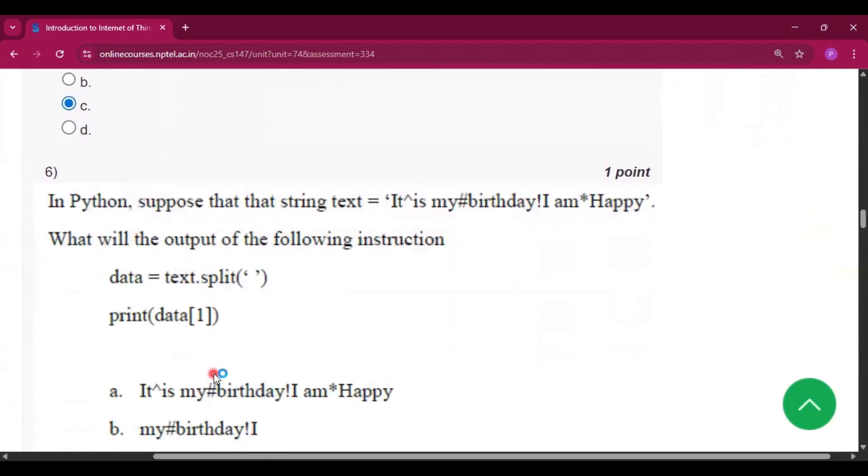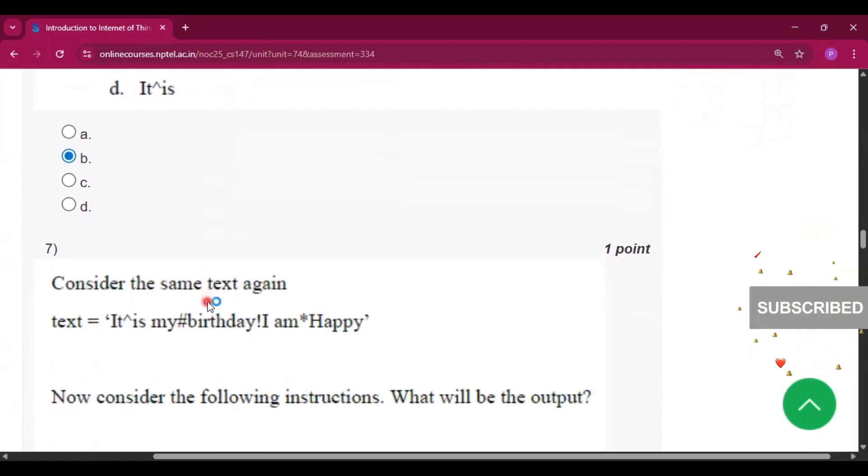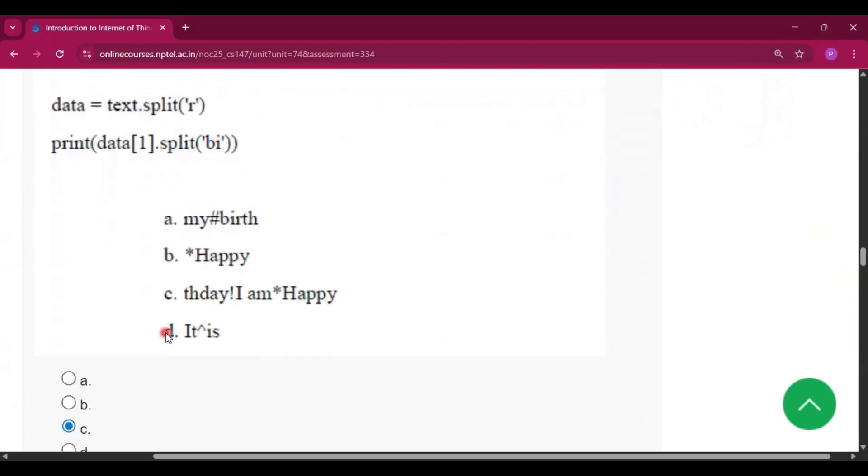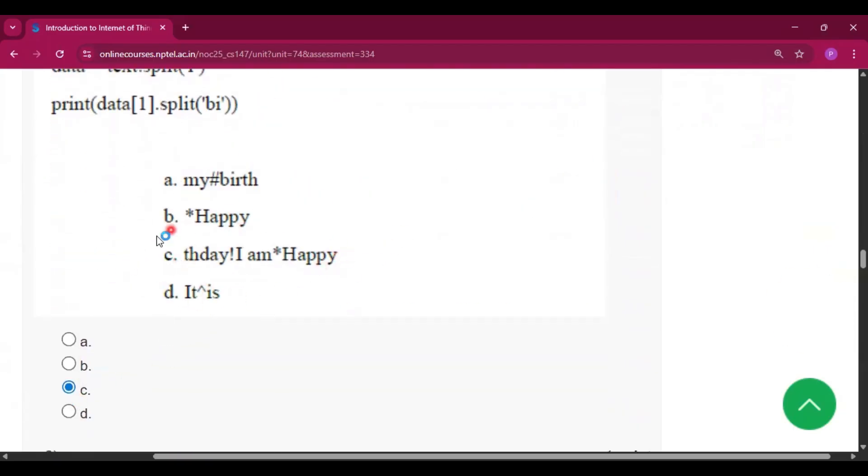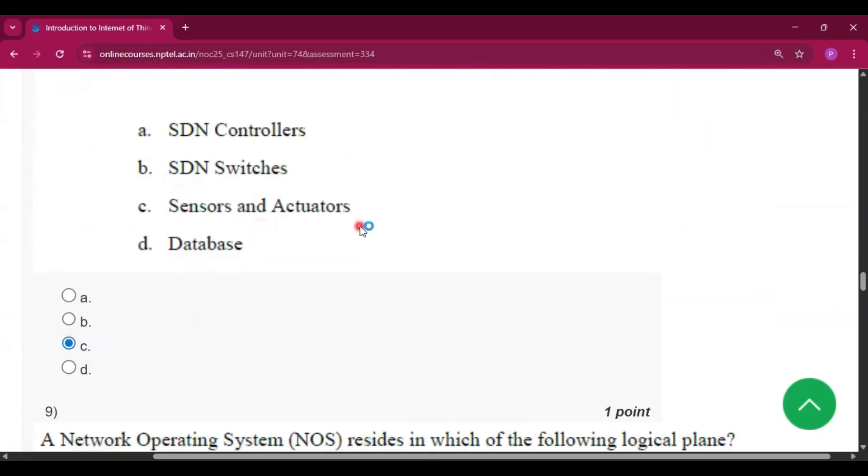Now question number six, the answer will be option B, that is 'my has birthday' then exclamation sign then I. Now question number seven, the answer will be option C. Now question number eight, the answer will be option C, that is sensors and actuators.